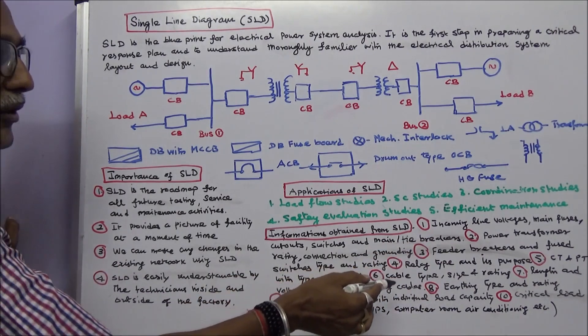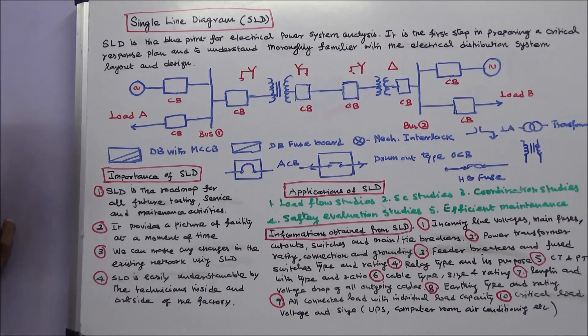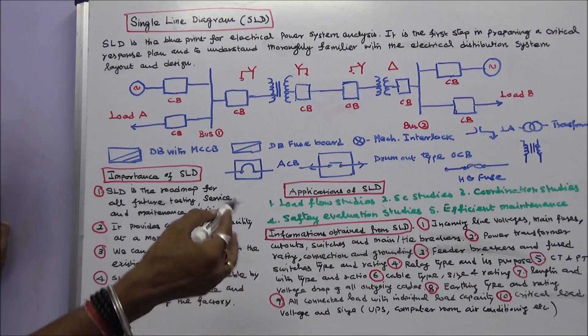Number nine, all connected loads with individual load capacity. Number ten, critical load voltage and size—that is UPS, air conditioning, computer room, air conditioning room, and emergency pump, emergency light details.